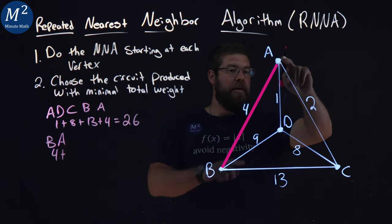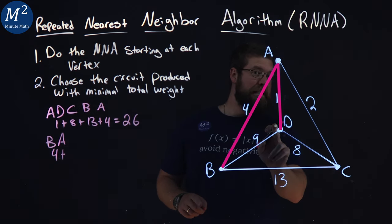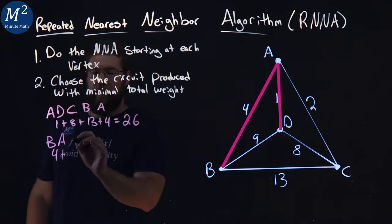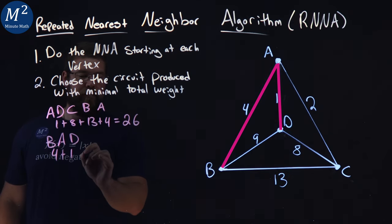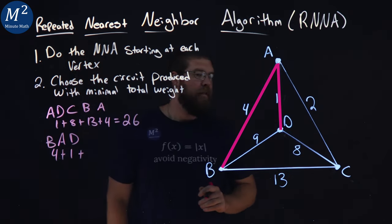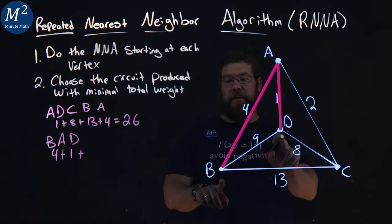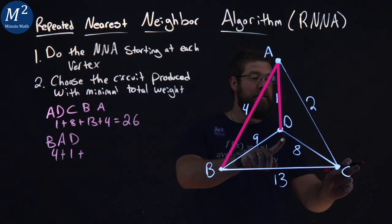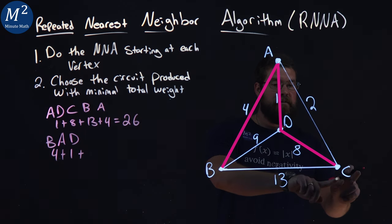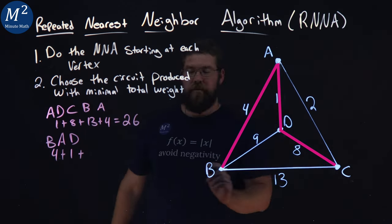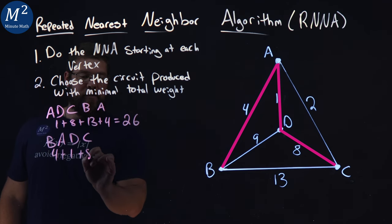Then from A, the nearest neighbor would be unvisited, would be D. Weight of 1. Then from D, the nearest neighbor unvisited, we couldn't go back to B because that's where we started. We still have to hit C. So we went to C here. C, that's going to give us a weight of 8, that edge.